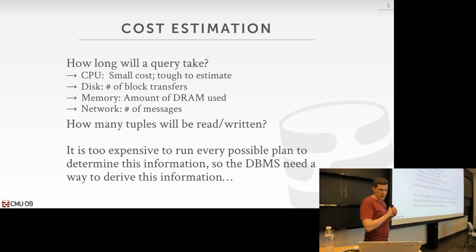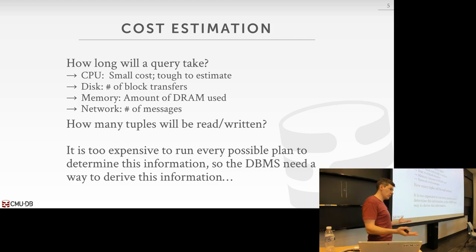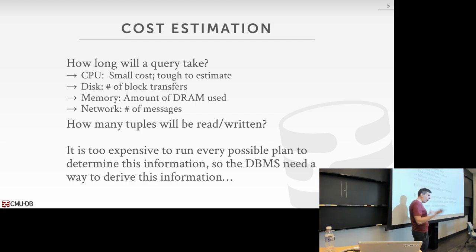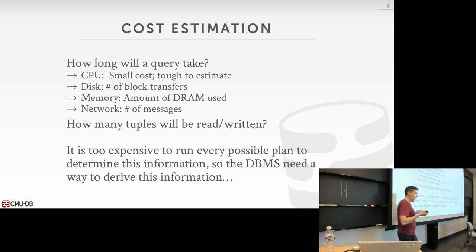Today's agenda: we're going to first talk about how to do plan cost estimation with our cost model. Then we'll talk about how to do enumeration — how we're going to intelligently iterate over different possible query plans in order to find the one we think is the best. Because this is NP-hard, we can't do an exhaustive search, so we need to be smart. And then we'll finish up talking about nested subqueries.